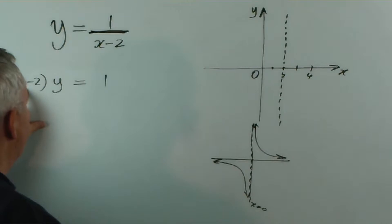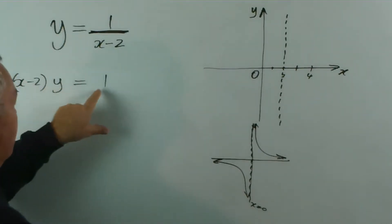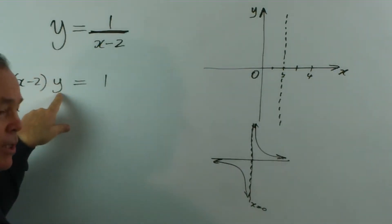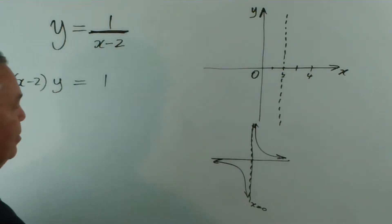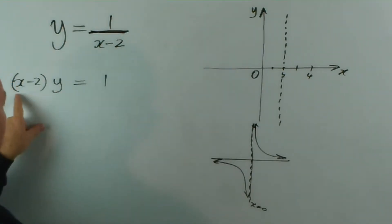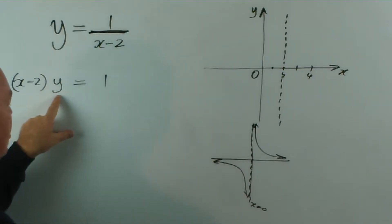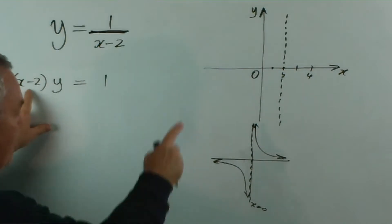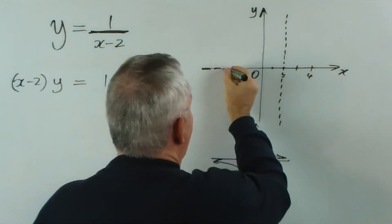Now, if x equals 2, we've got 2 minus 2 is 0, and 0 times something can't equal 1. Nor can we have a solution if y equals 0, because 0 times something can't possibly equal 1. So, analysing these two terms is a good way of identifying where your asymptotes are: x equals 2 is one asymptote, and y equals 0 is our other asymptote.